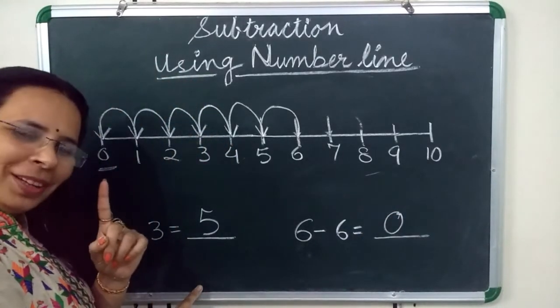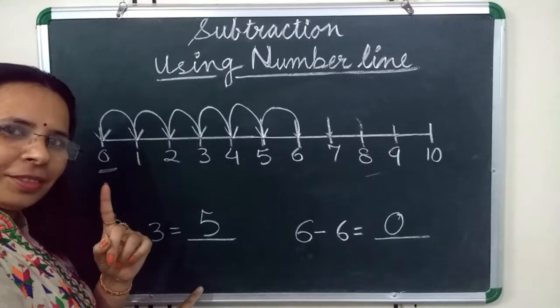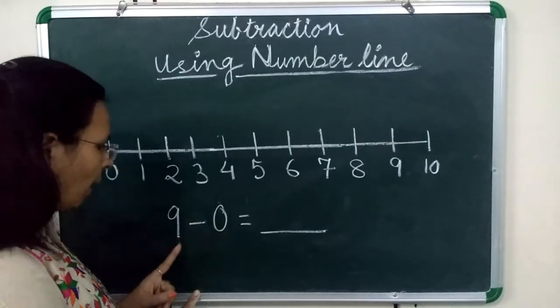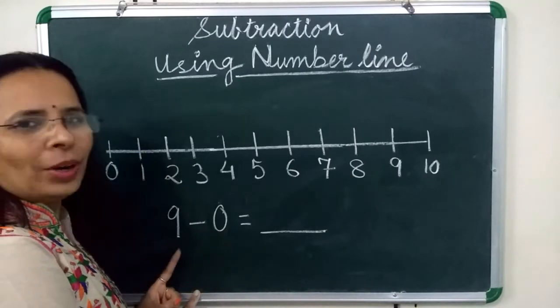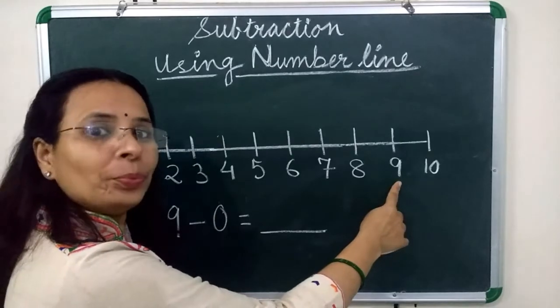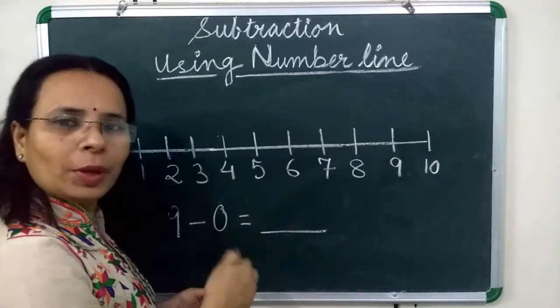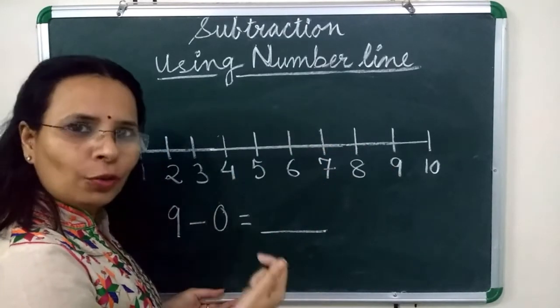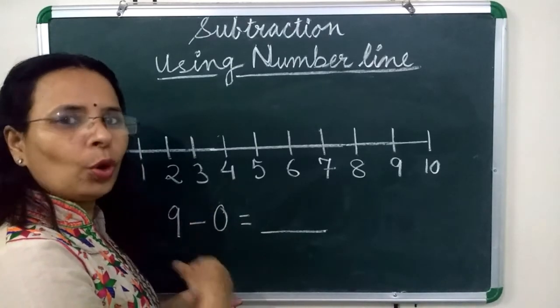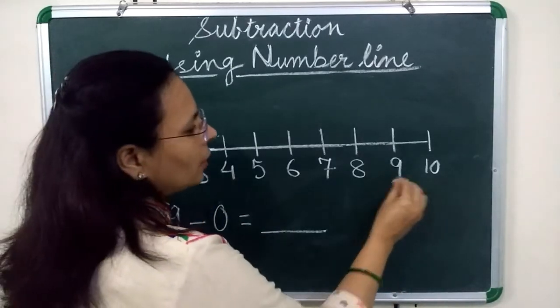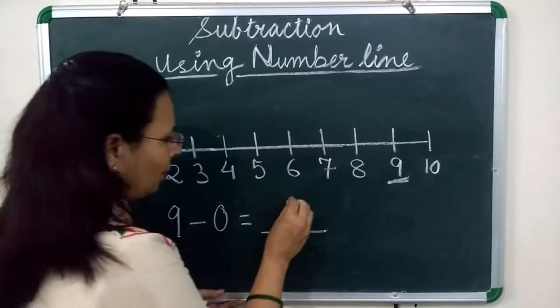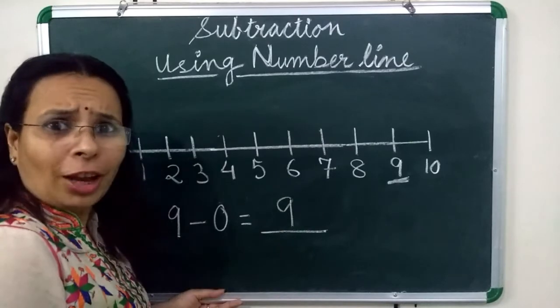One more example. Children, in this question we have to subtract 0 from 9. So we start from 9. And 0 means nothing. So we will move no steps back. We stay at the place of 9. So our answer is 9. Very simple.